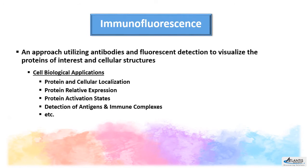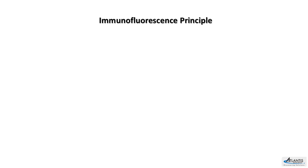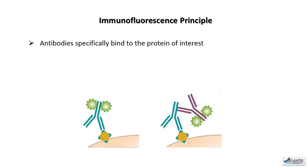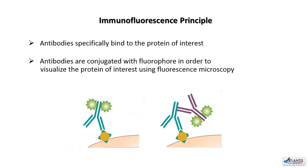Immunofluorescence is an approach utilizing antibodies and fluorescent detection to visualize the protein of interest. It can be applied to many cell biological studies including protein localization, protein expression, and many more. The principle of immunofluorescence is that antibodies specifically bind to the protein of interest and they are conjugated with a fluorophore in order to visualize the protein.